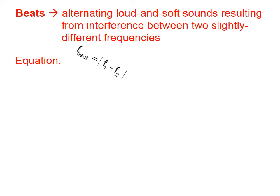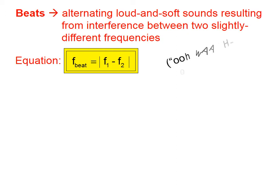Beats are alternating loud and soft sounds resulting from interference between two slightly different frequencies. The equation for the beat frequency is the absolute value of the difference between two very close frequencies. A beat frequency sounds like wah, wah, wah.